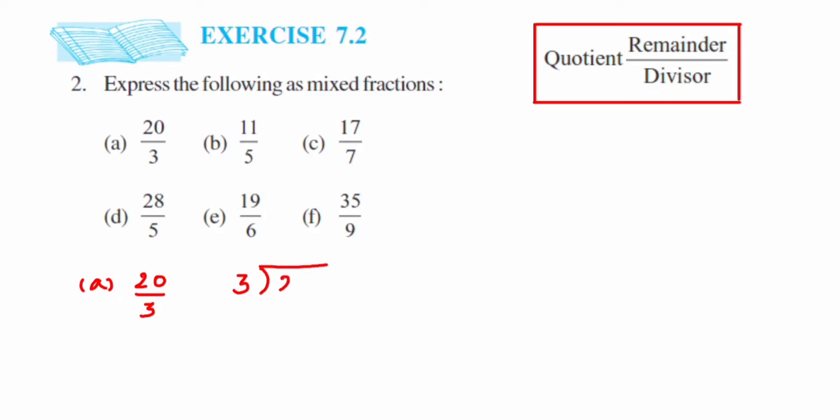Now divide. 3 times 6 is 18, right? 3 sixes are 18. When you subtract, you will get the remainder 2.